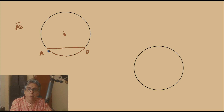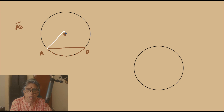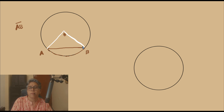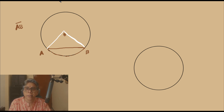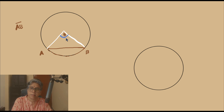Now we know that if you connect the endpoints of the chord to the centre of the circle on either side — that is, A is connected to O and B is also joined to O — we can say that this chord AB has subtended an angle at the centre. So an angle is being subtended at the centre.